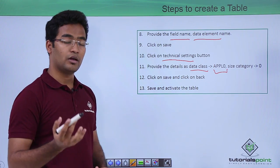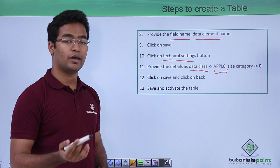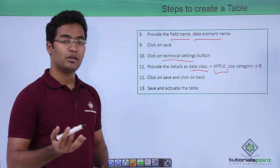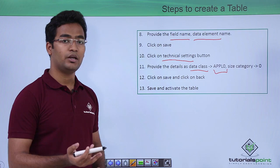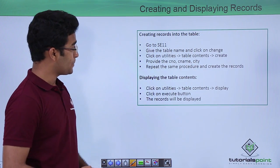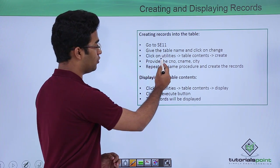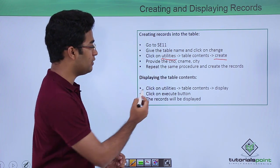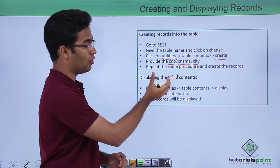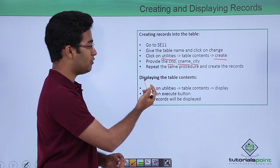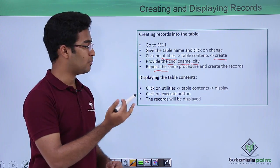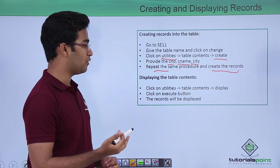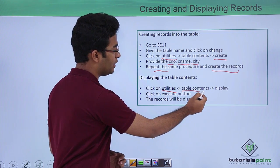Then we click Save and go back. After everything is done, we save our table, check it, and then activate it. This completes the full structure of the table. Next, we create some records. There is a button on the toolbar known as Utilities — when we click on Utilities there is Table Contents and we click on Create. Suppose we have fields like C number, C name, and city — all these field names appear and we pass our values and click Save. We repeat this procedure multiple times to create records.